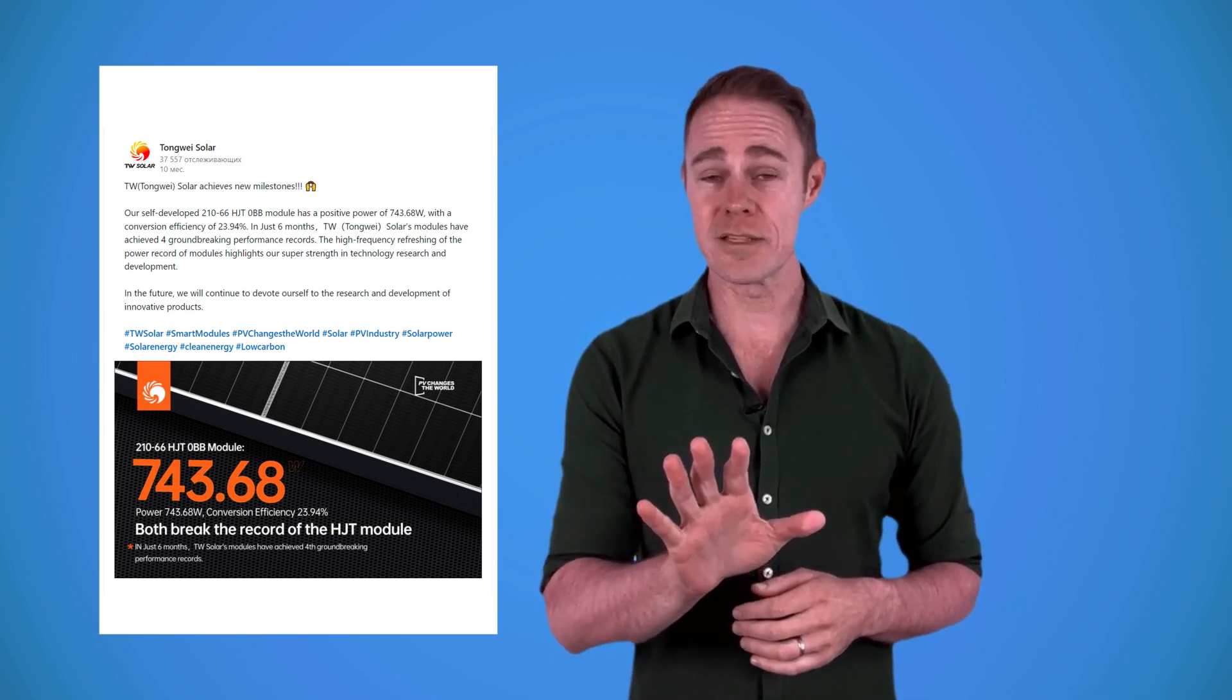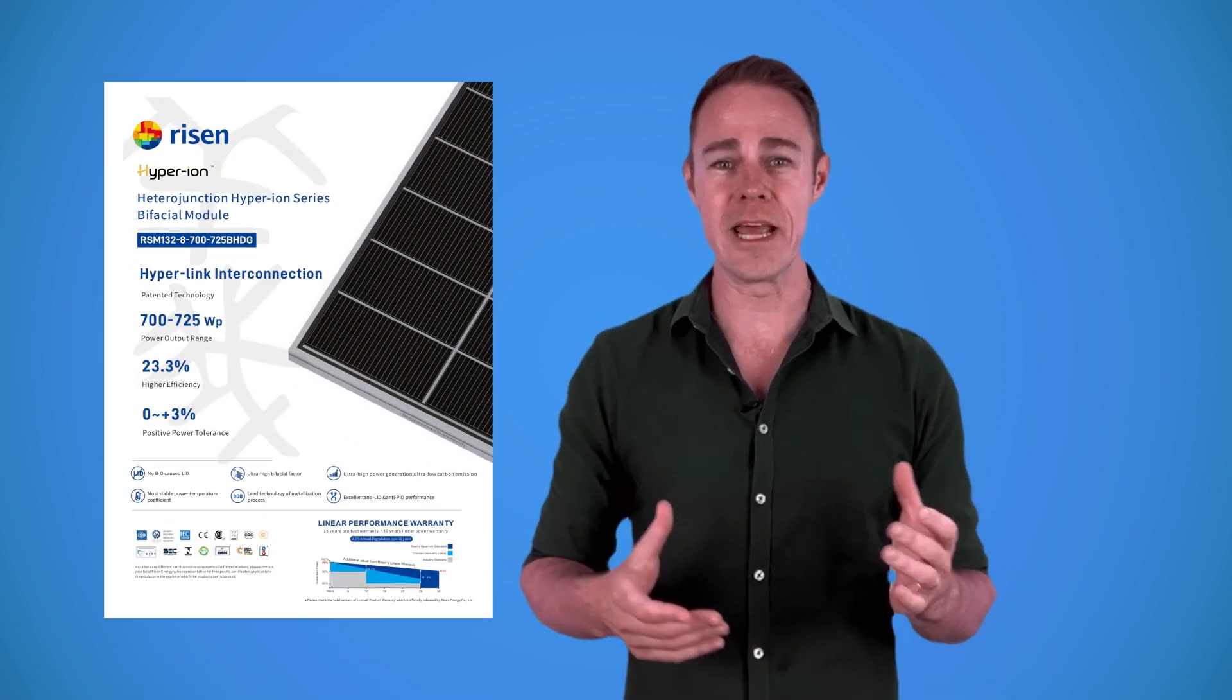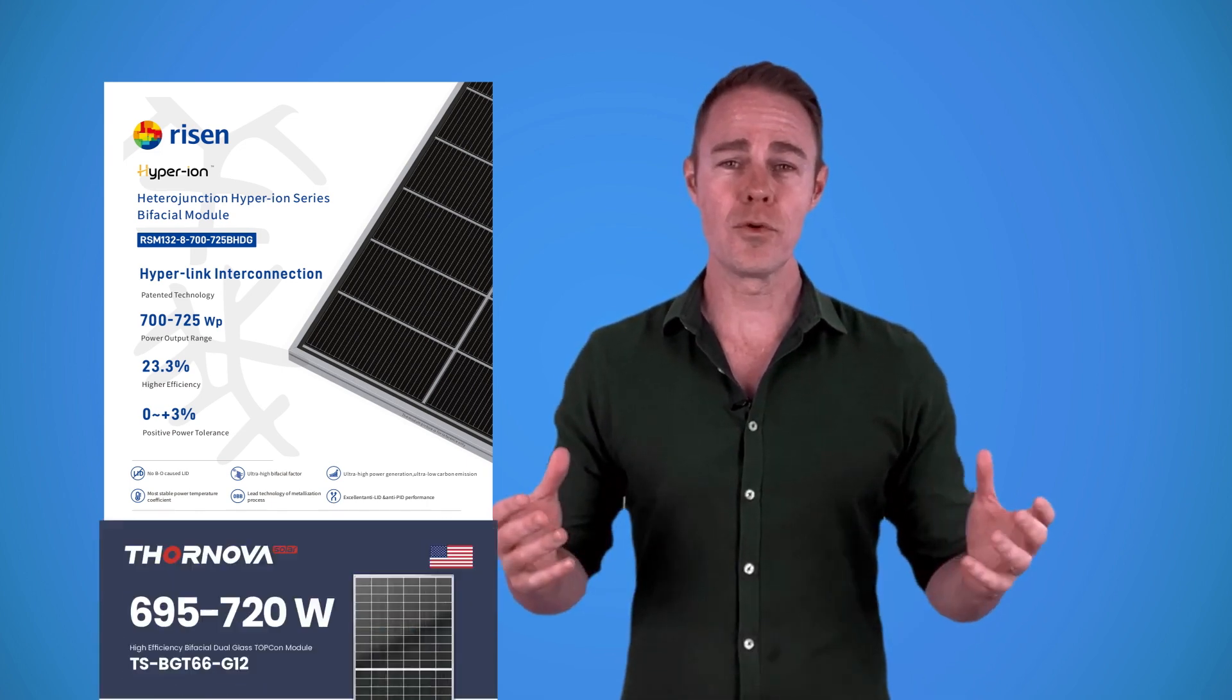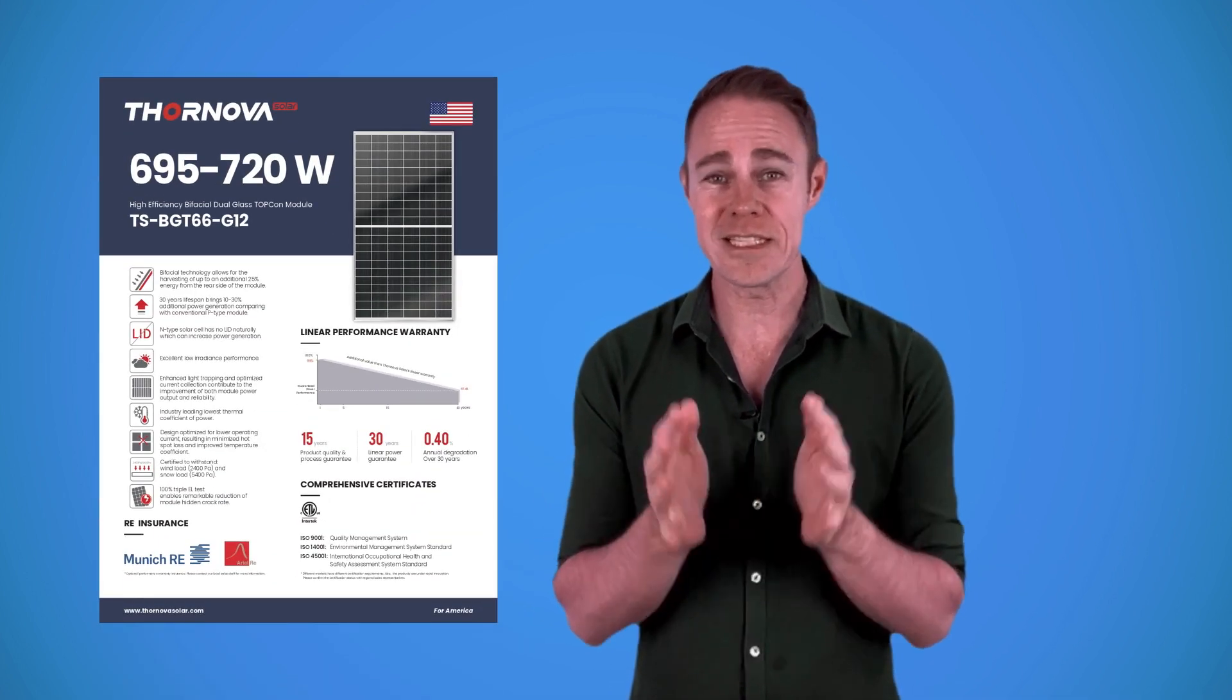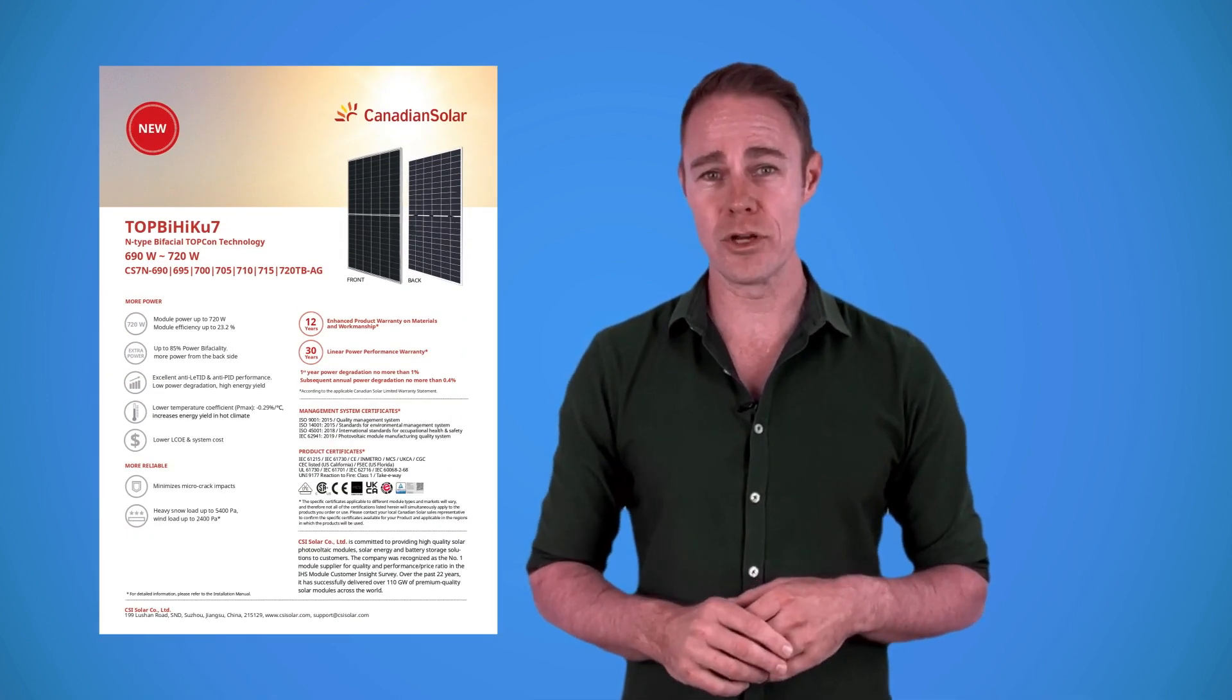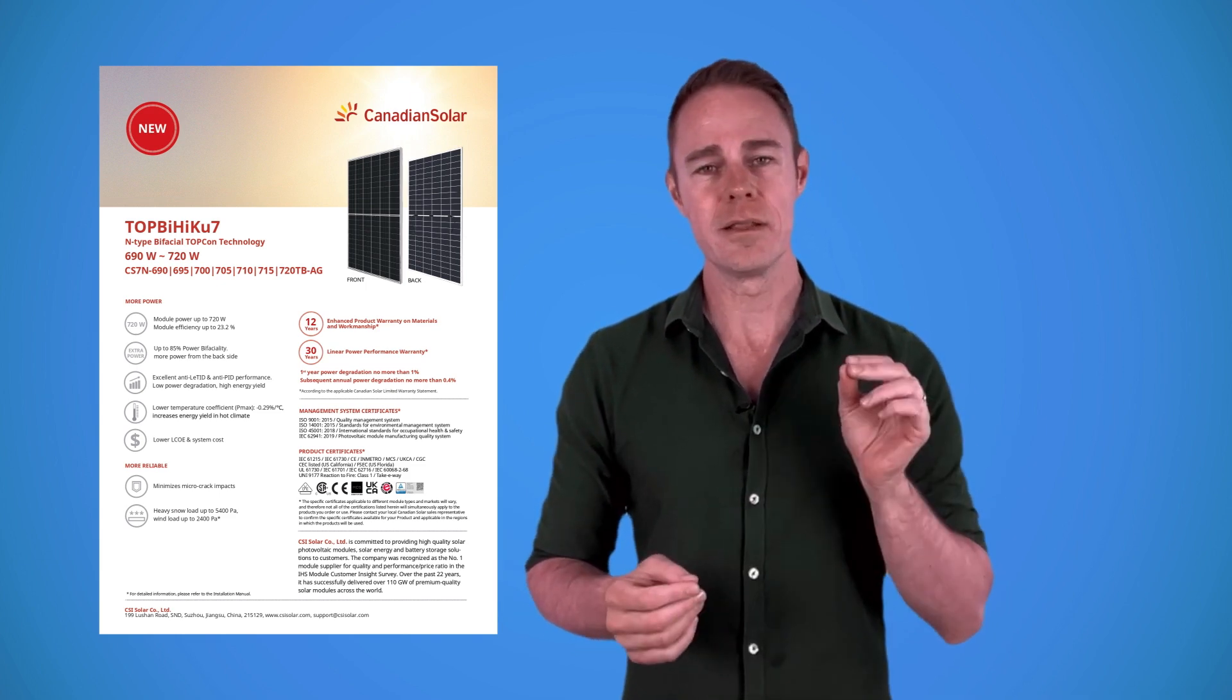Risen Energy—they've got a Hyperion bifacial solar panel in their product line which is rated for 725 watts. Trina Solar—they've recently unveiled a 720-watt solar panel. Canadian Solar has 715-watt solar panels. So yeah, you can see in terms of maximum power this is the range that we're currently at.